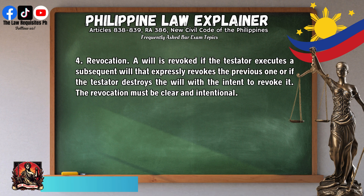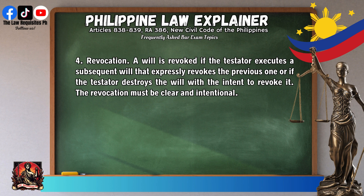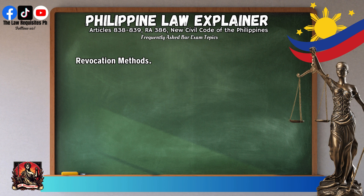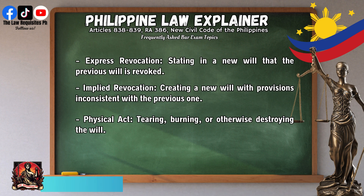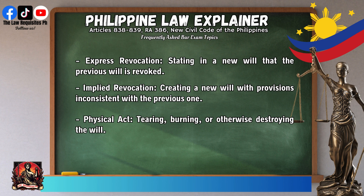Fourth, revocation: a will is revoked if the testator executes a subsequent will that expressly revokes the previous one, or if the testator destroys the will with the intent to revoke it. The revocation must be clear and intentional. Revocation methods include: express revocation — stating in a new will that the previous will is revoked; implied revocation — creating a new will with provisions inconsistent with the previous one; and physical act — tearing, burning, or otherwise destroying the will.